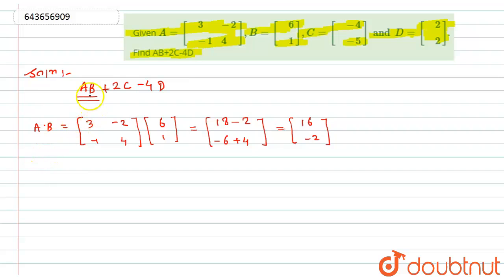So this is A into B which we have found here. Now I will directly find what we have to find here, that is AB + 2C - 4D.